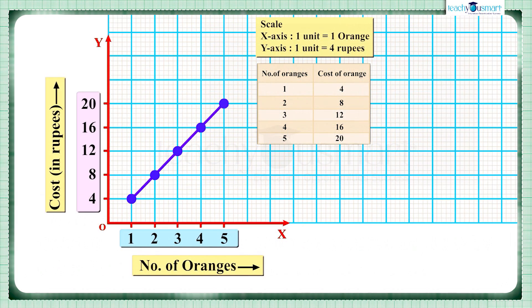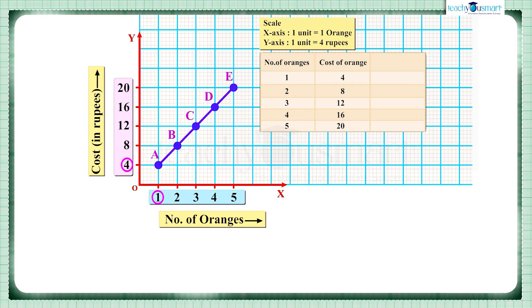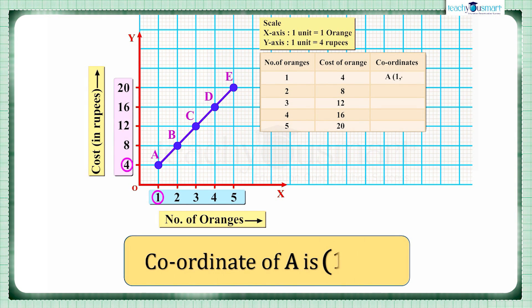Here we take each point as A, B, C, D, and E. When we consider point A and draw the perpendicular to both axes, we get the x-coordinate as 1 and the y-coordinate as 4. Therefore, the coordinate of A is (1, 4).